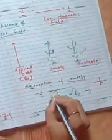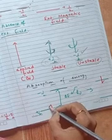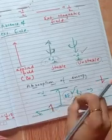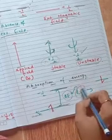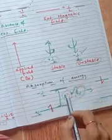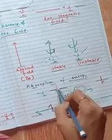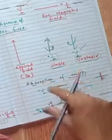Now, nuclei prefer to be in the ground state. If we provide electromagnetic radiation whose energy matches the energy gap ΔE between the two spin states, the nucleus will get excited to the higher state — it will flip its spin. The radiations used in NMR spectroscopy are radio waves; the energy of radio waves is sufficient to cause transition between the two spin states of the nucleus.